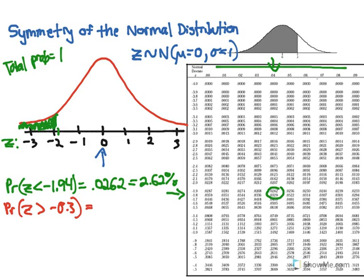Well, negative 0.3 is just to the left of 0. So, it's somewhere up here. And we can see that that's going to be quite a bit of area. Now, we know that 0 is the mean, which cuts the curve right in half. So, there's 0.5 probability to the right of 0. 0.5 probability to the left of 0.